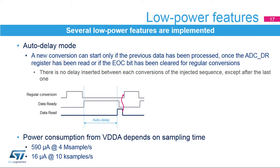When auto-delay mode is active, the ADC waits until the last conversion data is read or the end-of-conversion flag is cleared before starting the next conversion. This automatically adapts the speed of the ADC to the speed of the system reading the data, avoids unnecessary conversions, and thus reduces power consumption. This auto-delay mode does not apply to injected conversions except the last one when switching back to regular conversions.